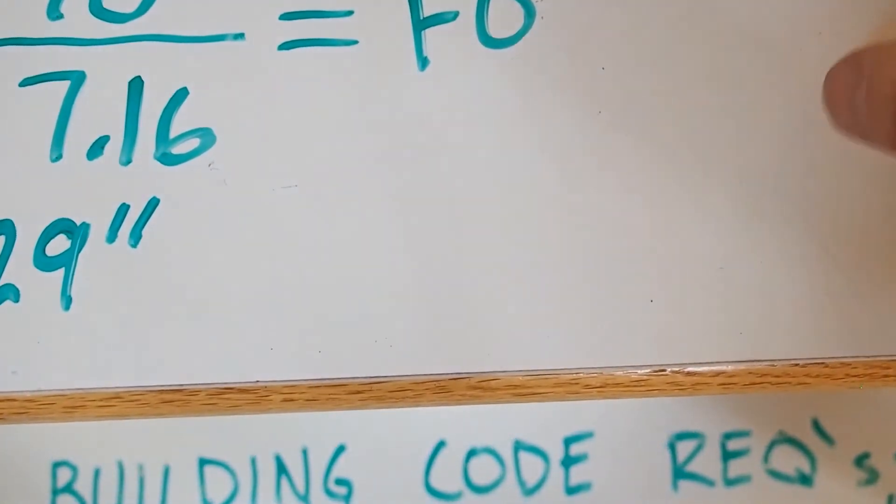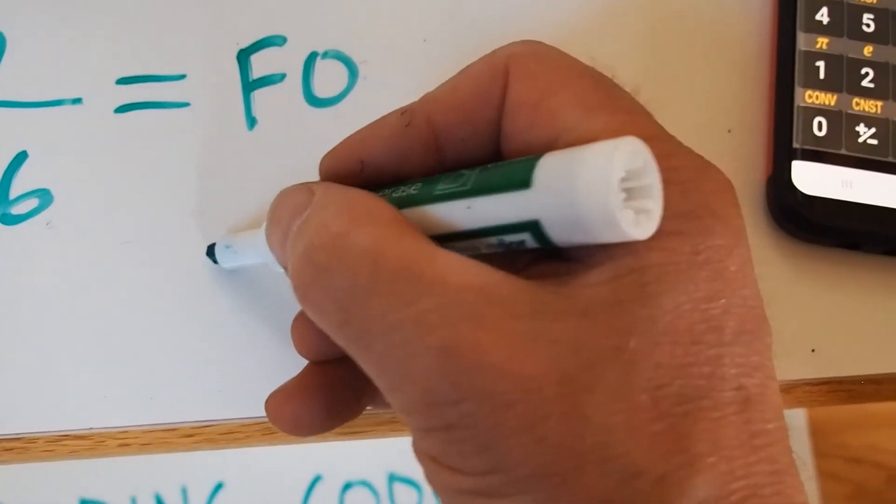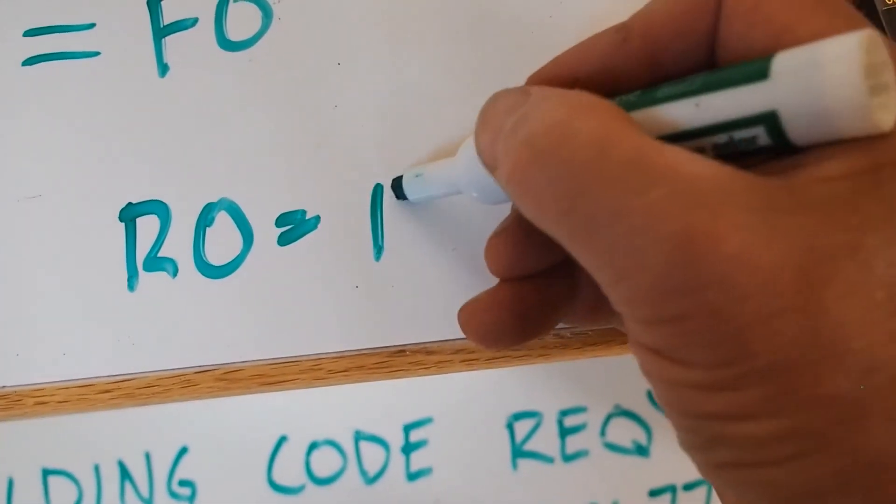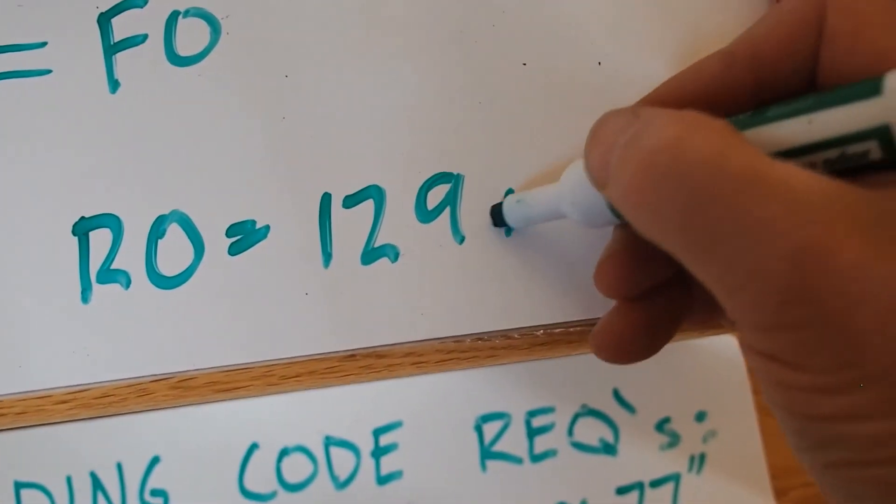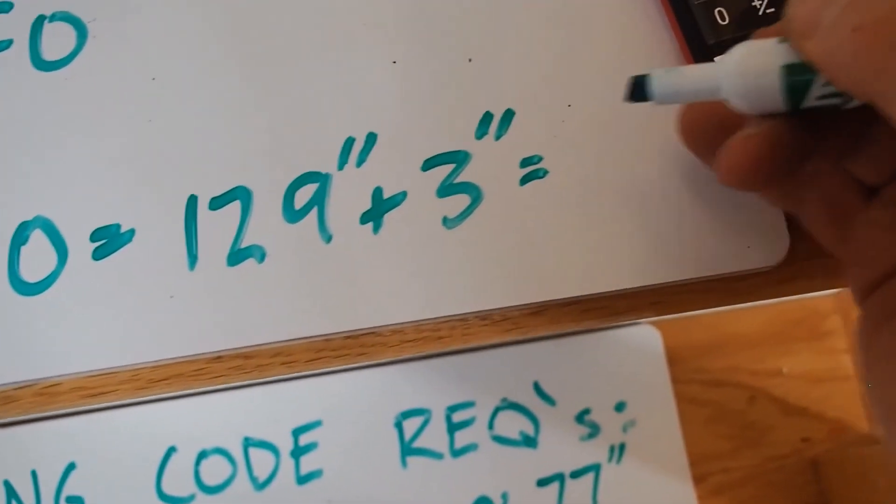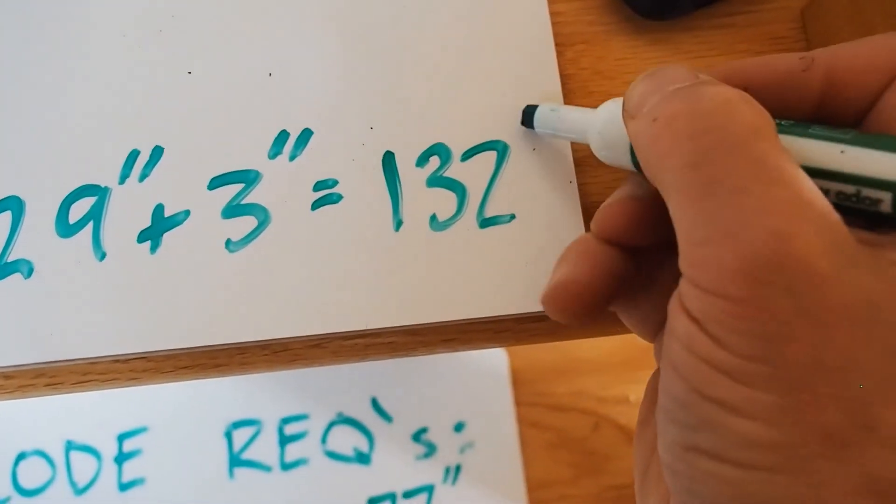And remember I have to add 3 inches to get my rough opening. There's my finished opening. I have to add 3 inches to get my rough opening. 129 plus 3, and that equals 132 inches.